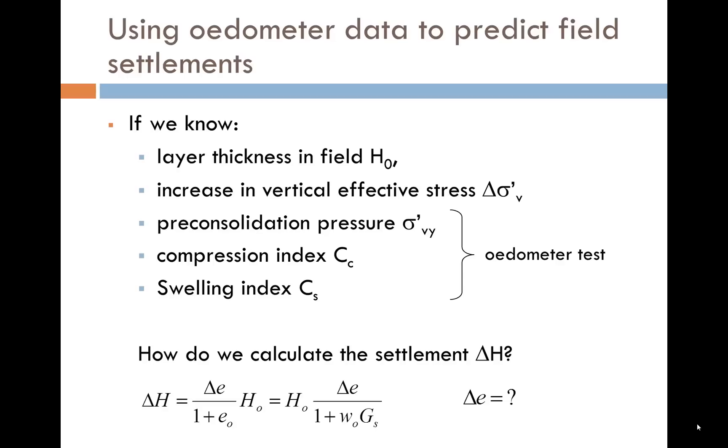Our starting point is the equation we looked at earlier, that ΔH is equal to Δe over 1 plus e0 times H0. And that's equal to H0 into Δe over 1 plus w0 times Gs, because the soil is saturated. So how do we determine Δe in that equation?